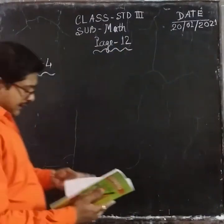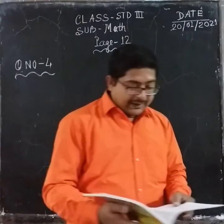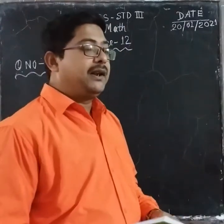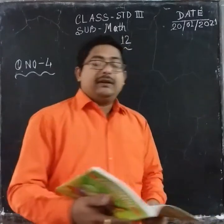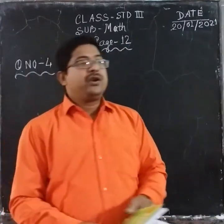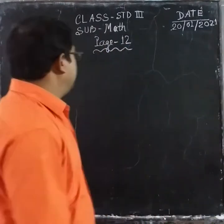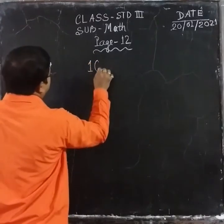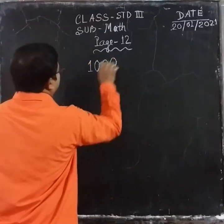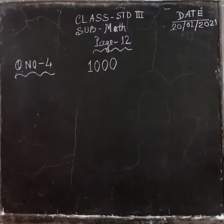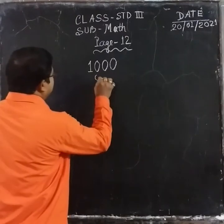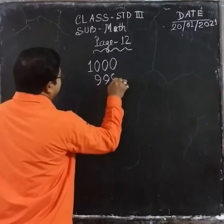How much is the largest 3-digit number? The largest 3-digit number — and then the smallest 4-digit number. So what is the smallest 4-digit number? The smallest 4-digit number is 1000. And the largest 3-digit number is 999.